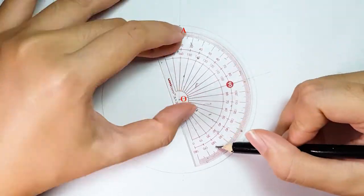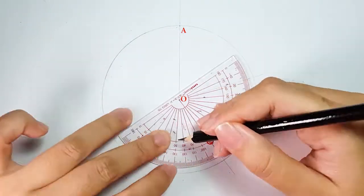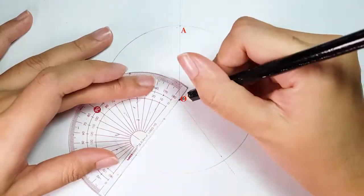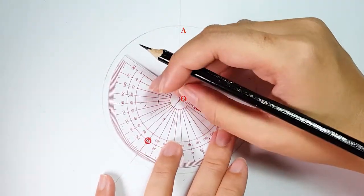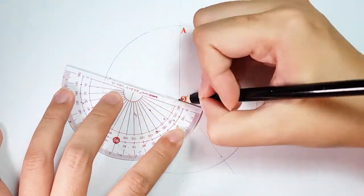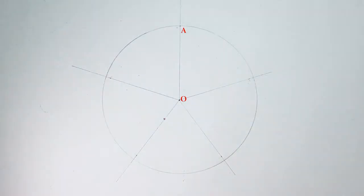Steps are repeated until you finish dividing the circle into 5 parts. These points are B, C, D and E.